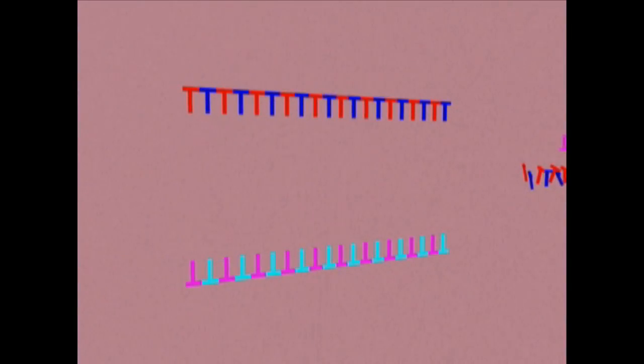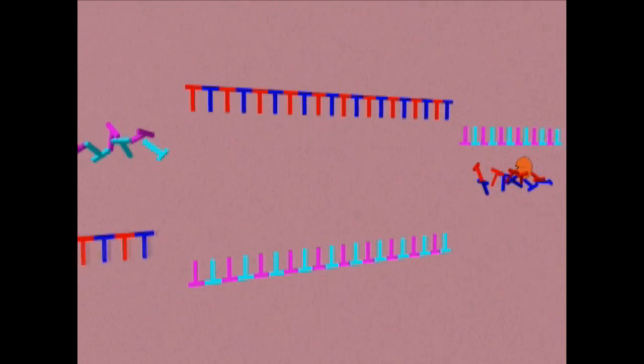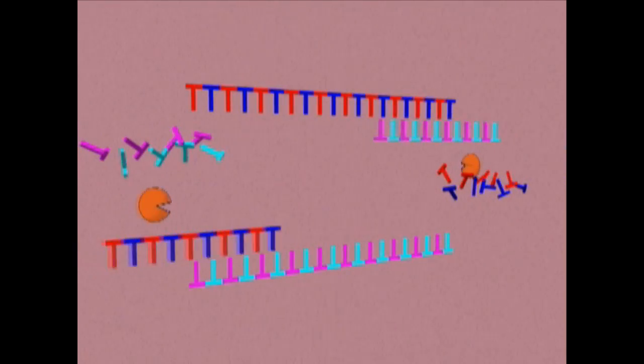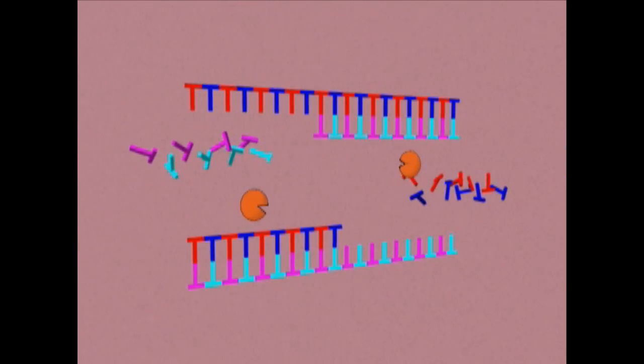The second step is known as annealing. The sample is cooled to allow two synthetic oligonucleotides, referred to as primers, to attach to the two separated strands.